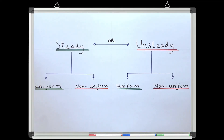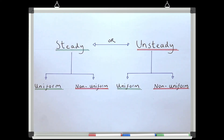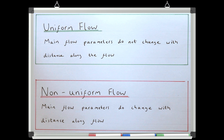To summarise this video: when considering a flow, we need to know what the main flow parameters are doing with both time and distance. If the main flow parameters are not changing with time, the flow is steady; if they are changing with time, the flow is unsteady. Once we have worked out if the flow is steady or unsteady, we consider what the main parameters are doing with distance along the flow — if they are constant along the flow, it is uniform; if they are changing, it is non-uniform. In the next video, the final instalment of this first lesson, we are going to bring together all of the theory from the last few videos to look at something called the Principle of Continuity.